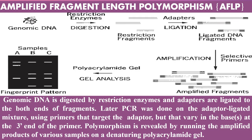The procedure for Amplified Fragment Length Polymorphism is that first the genomic DNA is digested by restriction enzymes, and the adapter is ligated to both ends of the restriction fragments. Later, PCR is done on the adapter-ligated mixture using primers that target the adapter but vary in the base at the three-prime end of the primer.